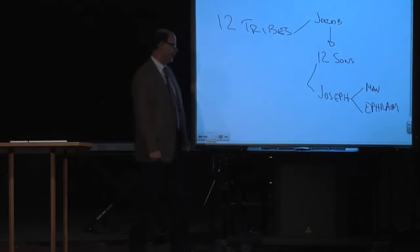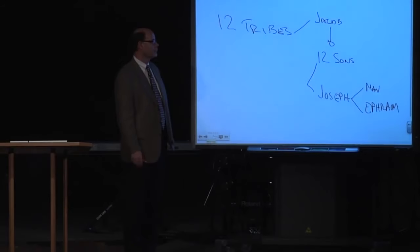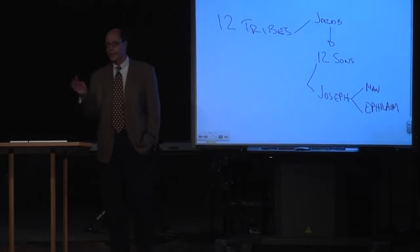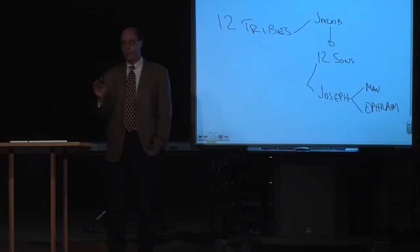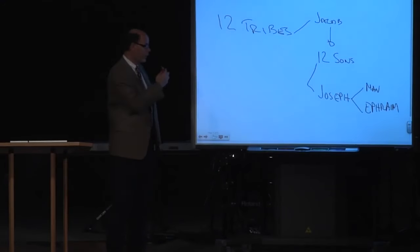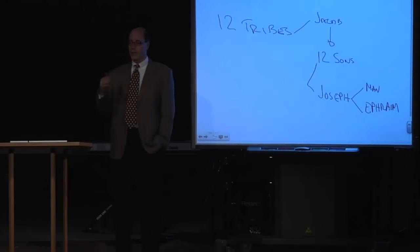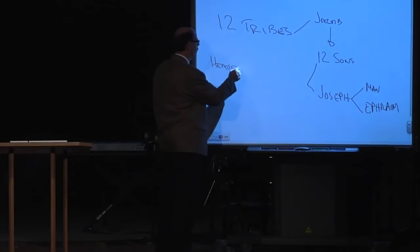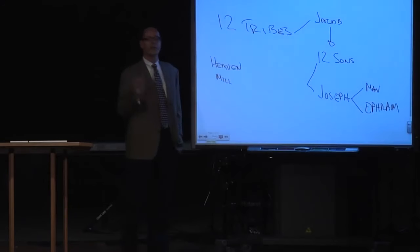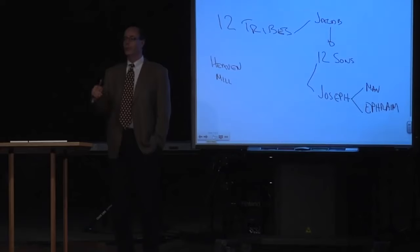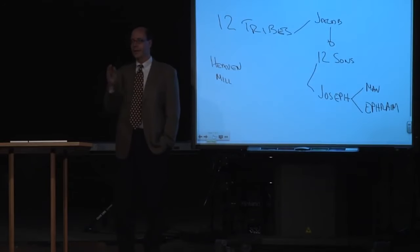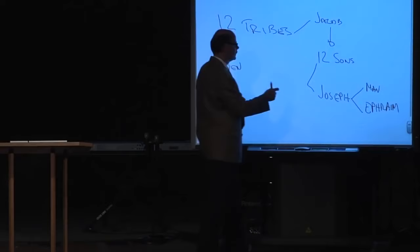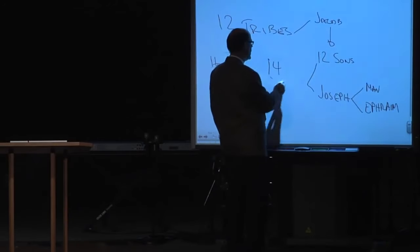When you look at the lists of the tribes, and there are many places the tribes are listed all the way through the Pentateuch, the tribal names, but also they're found in heaven in the foundations, they're also found in the millennium descriptions of the minor prophets. What you find is no two lists exactly agree.